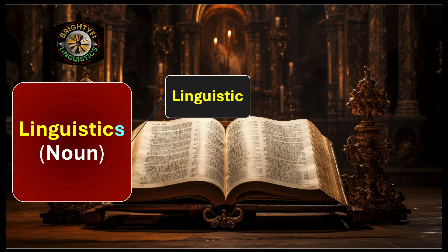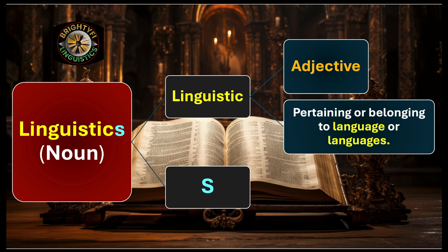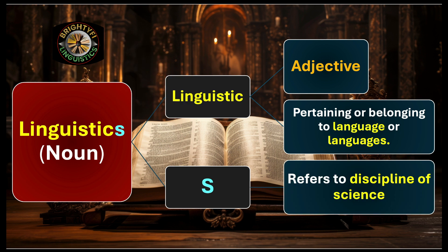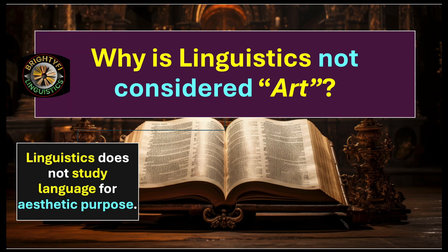The first branch can be termed 'linguistic' — an adjective pertaining to or belonging to language or languages. The morpheme '-s' in 'linguistics' refers to a discipline of science, and in that way linguistics is the subject in which we study language in a scientific manner. Now, why is linguistics not considered art? The first point is that linguistics does not study language for aesthetic purpose — linguistics does not look at language from the perspective of aestheticism or how you feel about language, and therefore cannot be considered art.